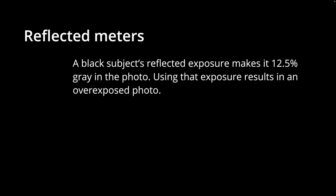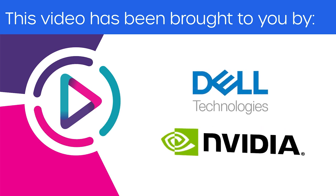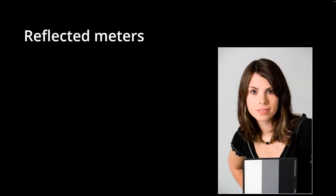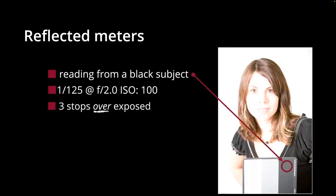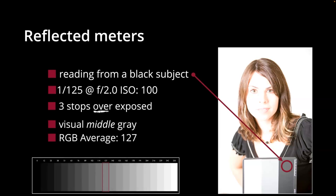Let's talk about each subject individually. A black subject's exposure makes it 12.5% gray, resulting in an overexposed photo because we're moving that black up about four stops to 12.5% gray. Here's a picture of Andrea — I take a spot reading of the black. The exposure is 1/125th at f/2, which is three stops overexposed, but now that black circle where I took the reading is at 12.5% gray. I read the RGB values and averaged them — they came out to 127.